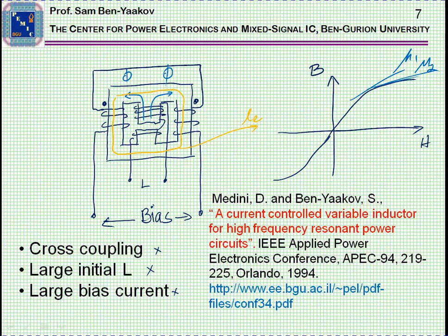This problem is overcome by this core design, which is shown here, that has been suggested in 1994 in a conference paper. The link can be found at the comment area of this clip. The basic idea of this design is, first of all, to have a gap, so we start with a low inductance. Secondly, we have this uncoupling by having the two windings with voltages which cancel each other.